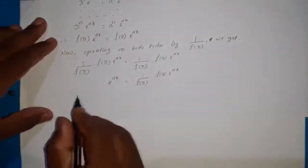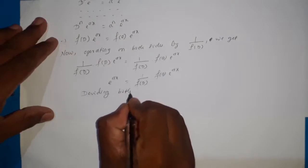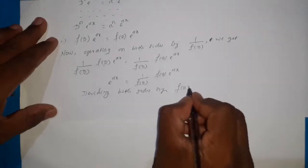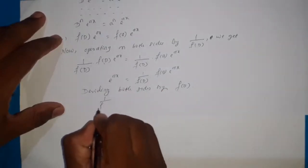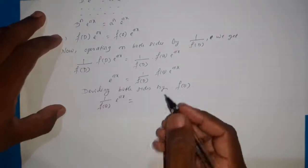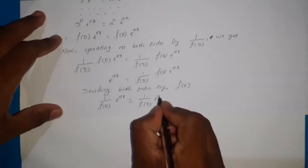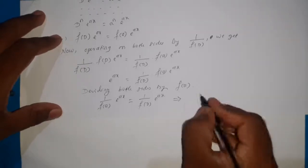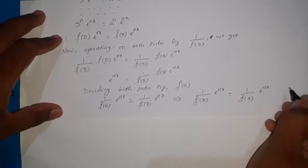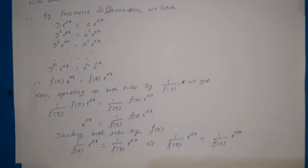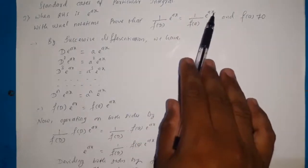Now dividing both sides by f(a): the left side becomes 1/f(a) · e^(ax), and on the right side f(a) cancels, leaving 1/f(D) · e^(ax). So this can be written as 1/f(D) · e^(ax) equals 1/f(a) · e^(ax). This is the derivation — prove that 1/f(D) · e^(ax) = 1/f(a) · e^(ax) — worth 5 marks.